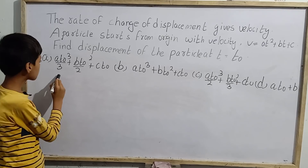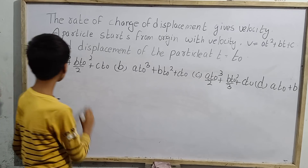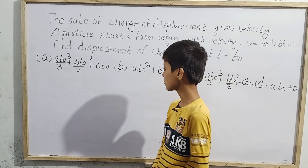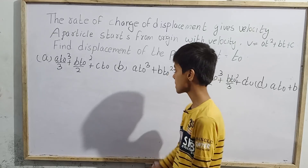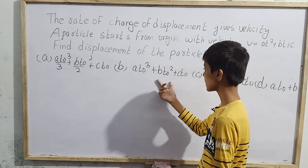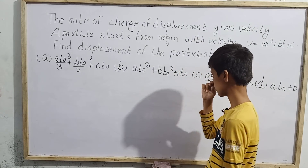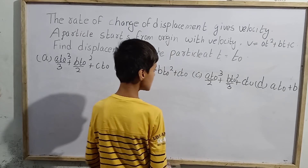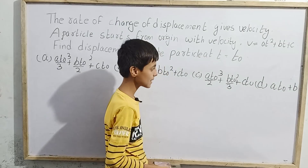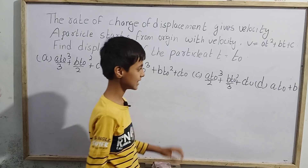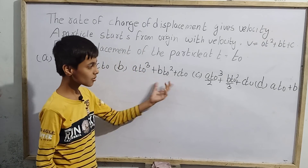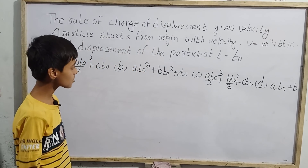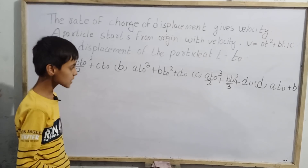The options given for displacement at time t = t₀ are: (A) at₀³/3 + bt₀²/2 + ct₀, (B) at₀³ + bt₀² + ct₀, (C) at₀³/2 + bt₀²/3 + ct₀, and (D) at₀ + b. We have to solve and find the correct one.